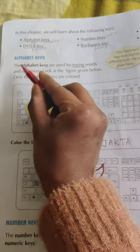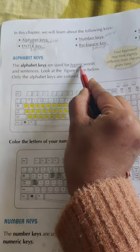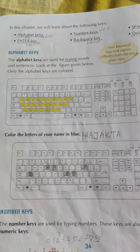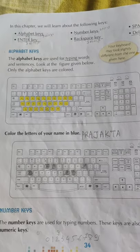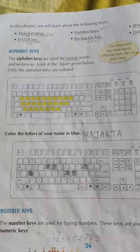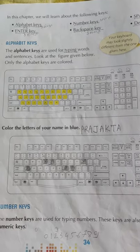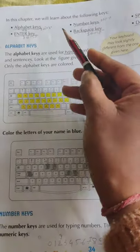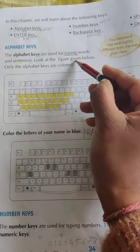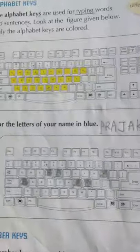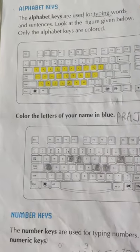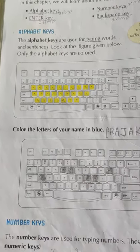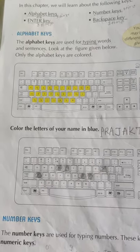The alphabet keys are used for typing words and sentences. When we want to type words and sentences, we use the alphabet key. For example, if you want to type your name, you use the alphabet key. Look at the figure given below — only the alphabet keys are highlighted.